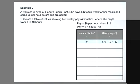For 0 hours worked, she still has to pay for her meals, so she actually loses $12 — her weekly pay is negative. For 5 hours worked, she'll make 6 times 5, minus 12, for a total of $18.